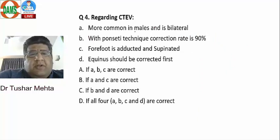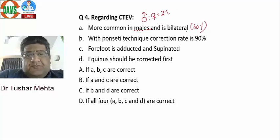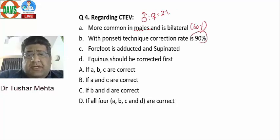Regarding CTE: the male-to-female ratio is 2:1 and bilaterality is around 60% — both true. With positive technique, sensitivity is 90 to 95 percent, which is also true.